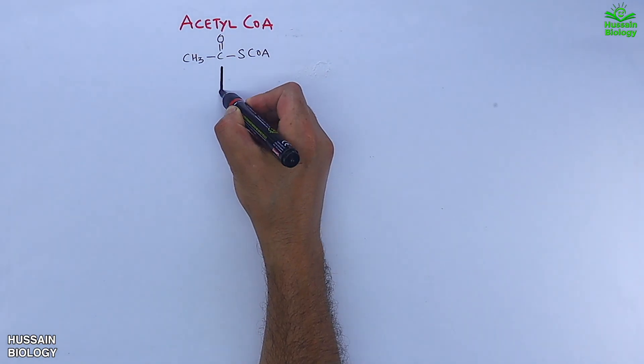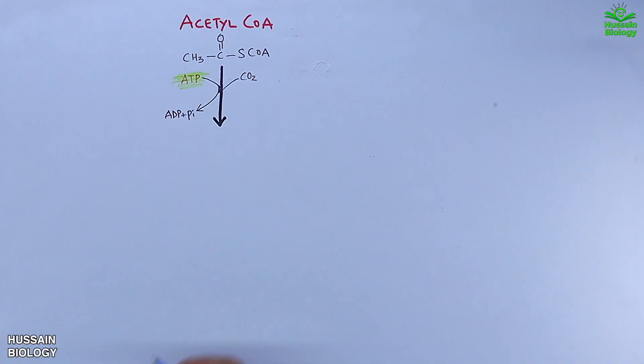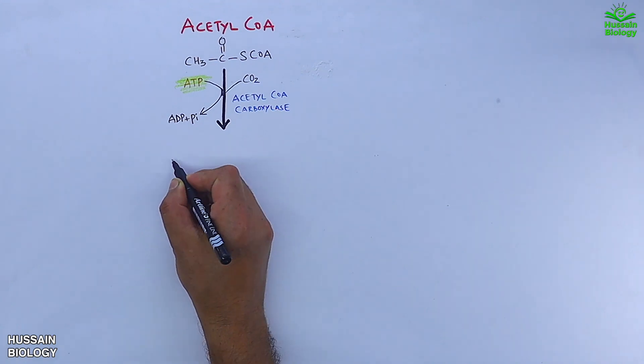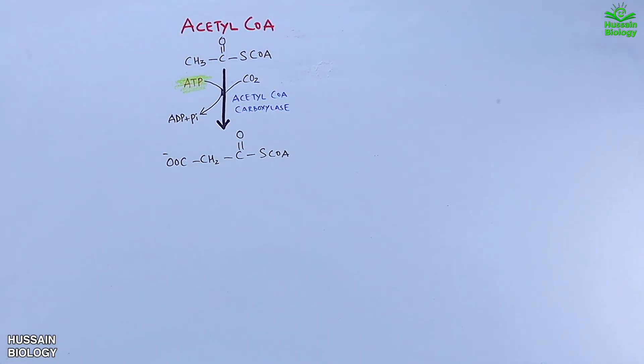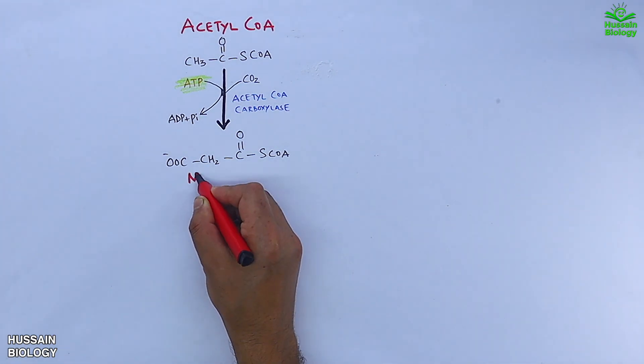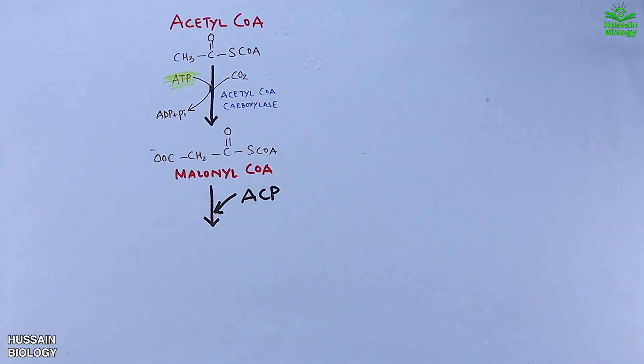Acetyl CoA in plastids is acted upon by acetyl CoA carboxylase enzyme, where there is incorporation of carbon dioxide and this reaction uses ATP. From this reaction, we get malonyl CoA. In the next step, the MCAMT enzyme acts on malonyl CoA.